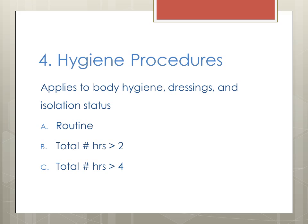Question 4 also has options A, B, or C. This question includes the patient's hygiene, dressing, and whether the patient is on isolation. Option A means routine — for example, you completed the patient's hygiene, a simple dry dressing, and tracheostomy care. Option B means you spent more than two hours for hygiene and dressing — for example, on top of the routine care, you changed the PK dressing multiple times. Option C means you spent more than four hours during your shift for hygiene and dressing.